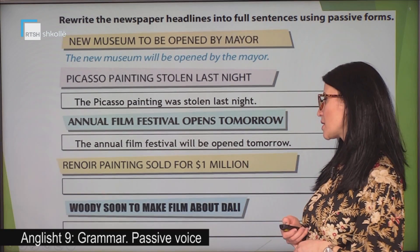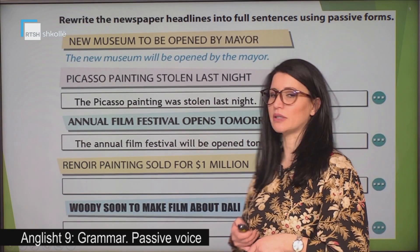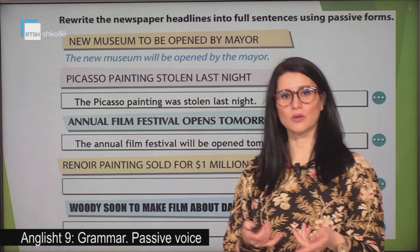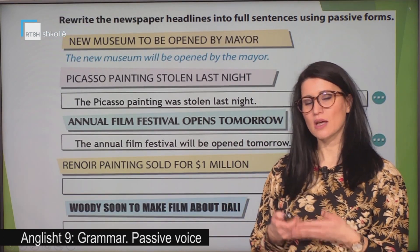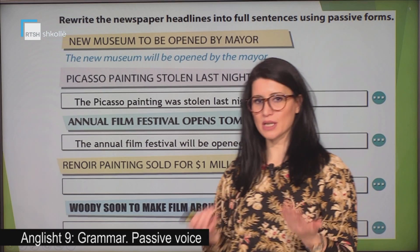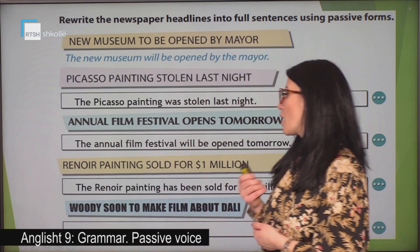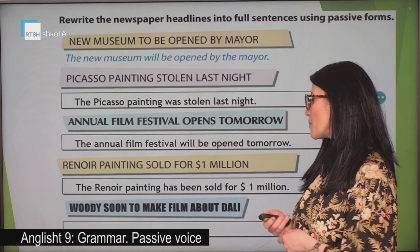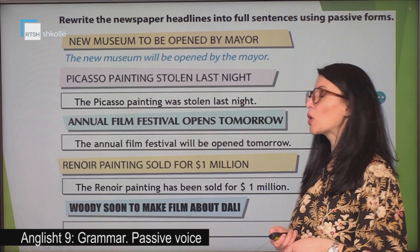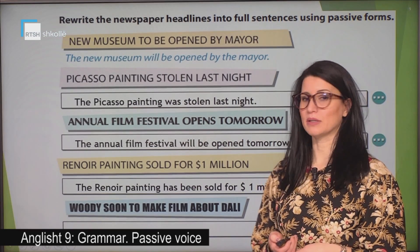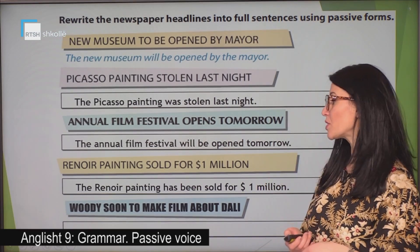Renoir painting sold for one million — how do we transform this sentence? Be careful with the subject and the object. The Renoir painting has been sold for one million dollars.